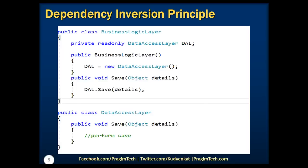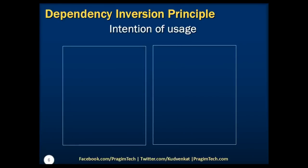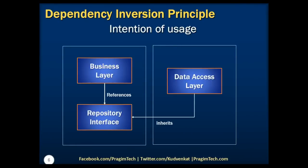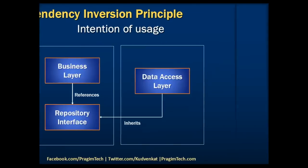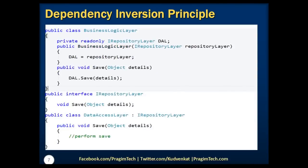Hence, based on the Dependency Inversion Principle, we apply an abstraction to decouple these layers. In order to achieve that, we introduce an interface that acts as abstraction so that both these modules are decoupled. This decoupling is demonstrated in the representation diagram, and we can rewrite our code as shown on the screen. Based on the pictorial representation, we have introduced the interface which is extended by the data access layer and referred to in the business logic layer. Hence, we can say that the iRepository layer acts as abstraction between these two modules.